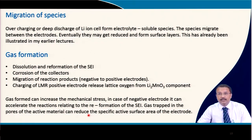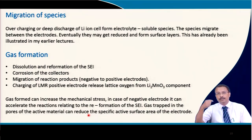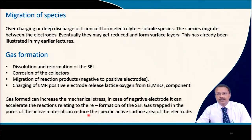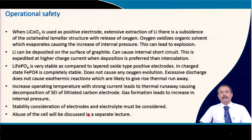In the case of a pouch cell you know that after forming cycles — 3–4 cycles — you have to allow all gas to evolve, then puncture it and finally seal it. So process complexity is increased because of this gas evolution.